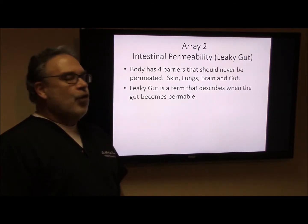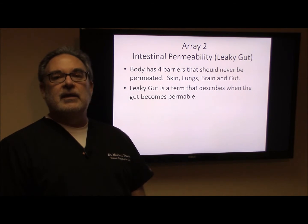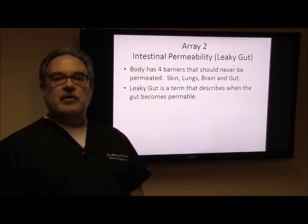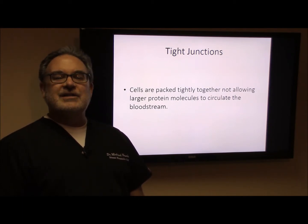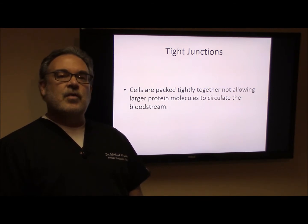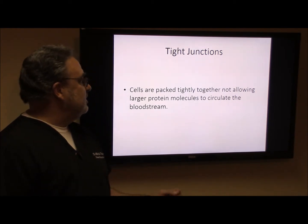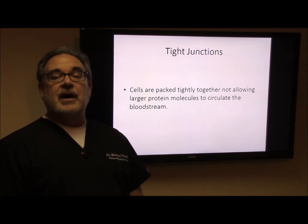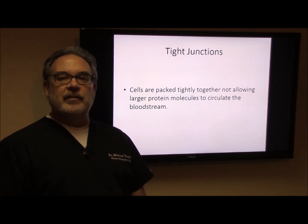There are basically four barriers in our body that should never be permeable. The first is the skin, the lungs, the brain, and the gut. Leaky gut is a term that describes when the membrane and the lining of the gut becomes more permeable. The cells around our intestinal wall, the mucosa, are tightly packed — they form what we call tight junctions. When we ingest food, the protein molecules travel through our system and nothing should pass through the body. But at times these tight junctions begin to separate just a little bit, making that wall permeable. These protein molecules then circulate through the body, and antibodies tend to recognize them as foreign invaders and can create inflammation throughout different parts of the body.